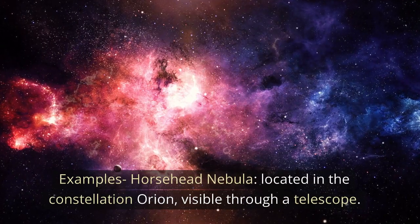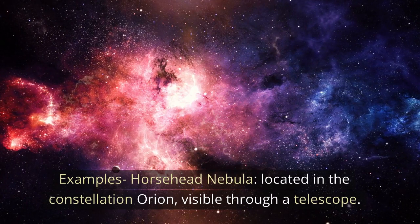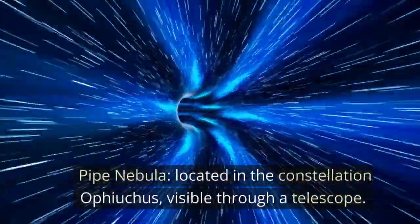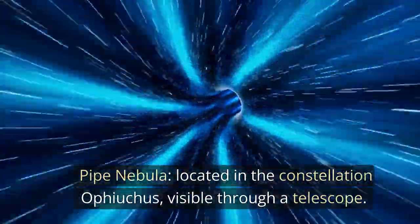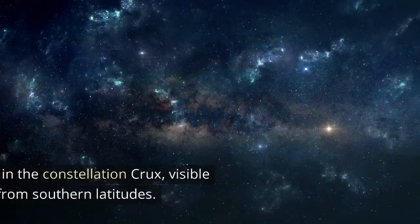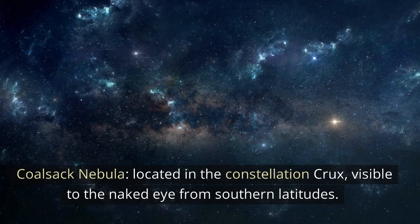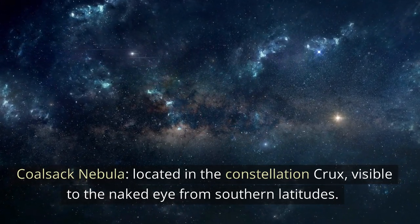Examples: Horsehead Nebula, located in the constellation Orion, visible through a telescope. Pipe Nebula, located in the constellation Ophiuchus, visible through a telescope. Coalsack Nebula, located in the constellation Crux, visible to the naked eye from southern latitudes.